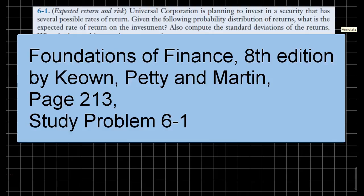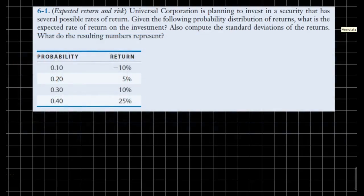We will now go over study problem 6-1 from our textbook. We are given an investment, a security you might say, and with various states of the world actually, four states of the world are provided with different probabilities, and related to each state of the world we have different outcomes or rates of returns.